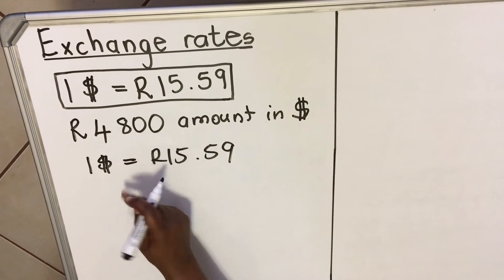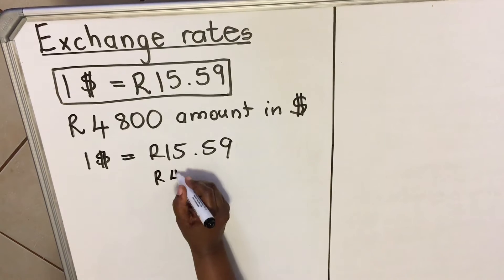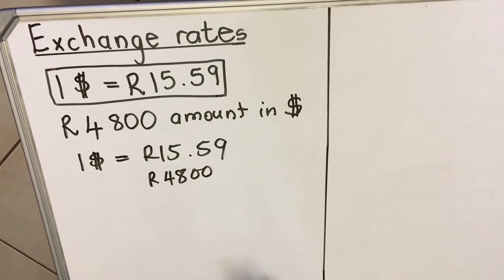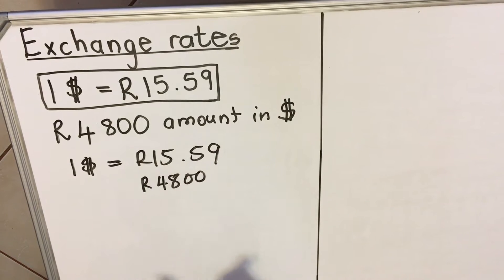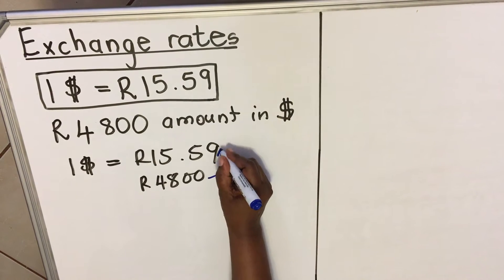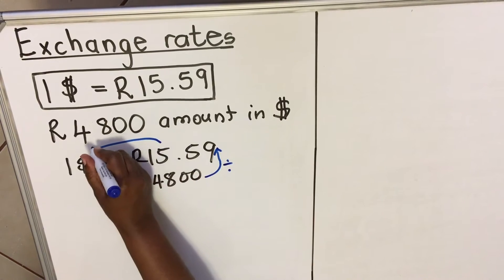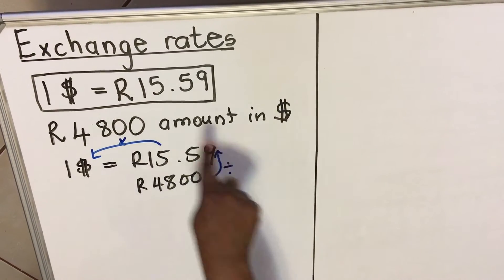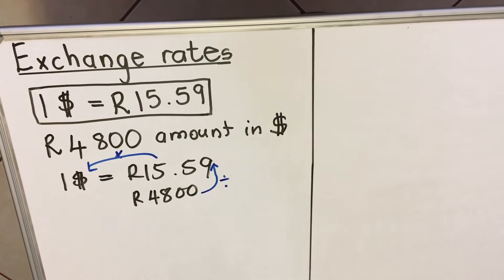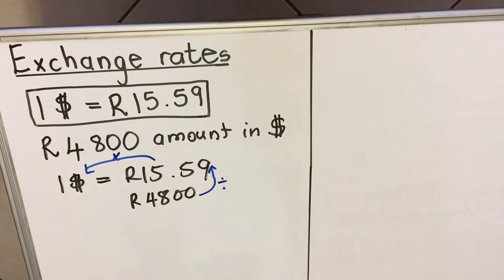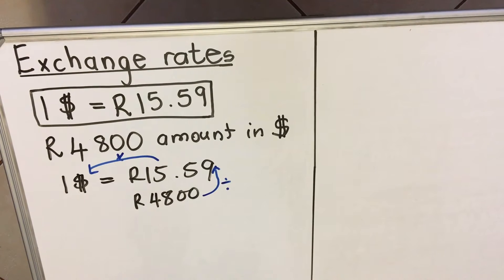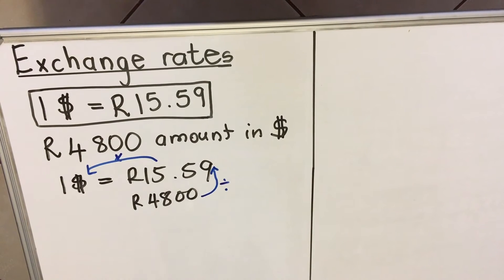The next thing you do is write whatever you have under the matching unit. I have rand, so I write the rand under the rand: 4800. Then the method is: go to your left-hand side, take the bottom number, and go anti-clockwise — the opposite direction of a clock. You divide first, then multiply. So: 4800 divided by 15.59, multiplied by 1.